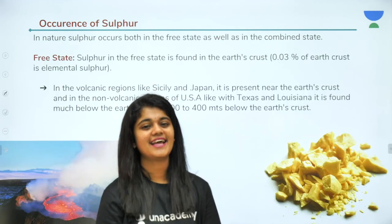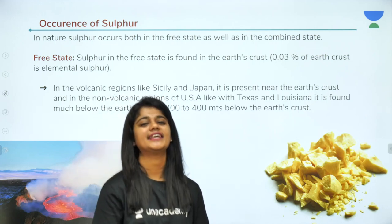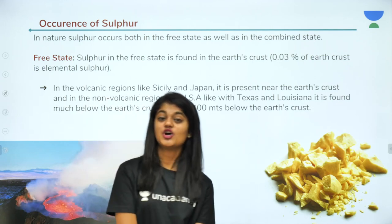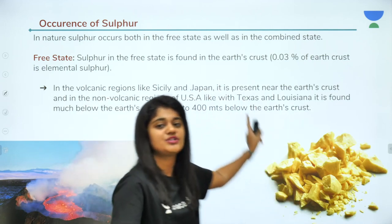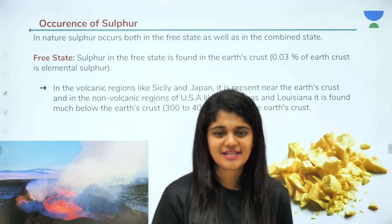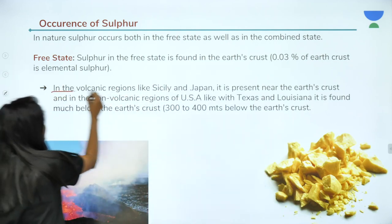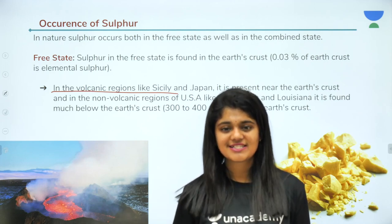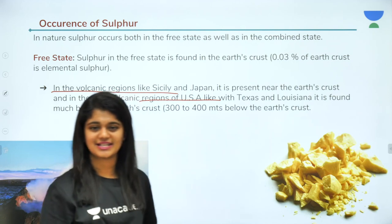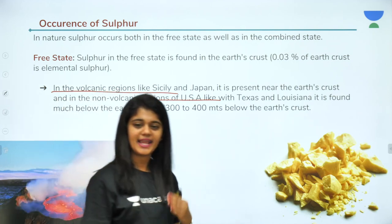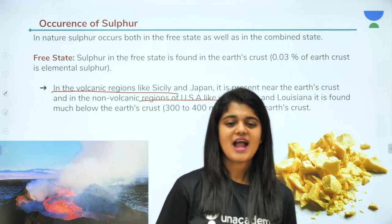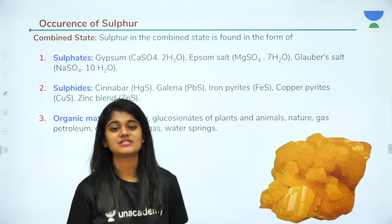Next we look at the occurrence of sulfur. Like nitrogen, it can exist in free state or combined state. In free state, only about 0.03% is found in Earth's crust as elemental sulfur. It is found near volcanic regions like Sicily and Japan close to Earth's crust, and in non-volcanic regions like Texas and Louisiana in the USA, it is found much below Earth's crust.